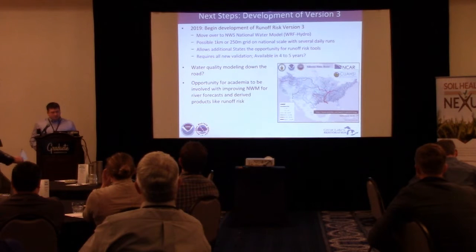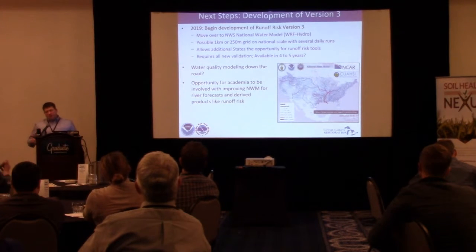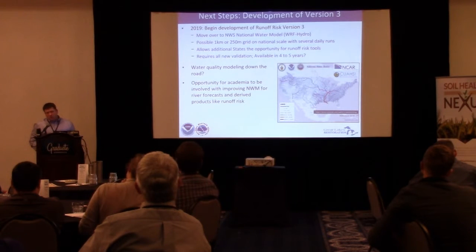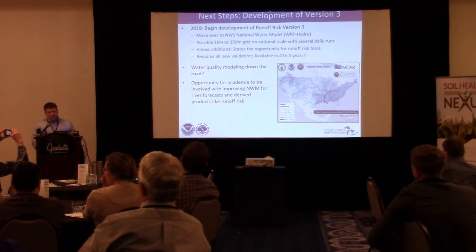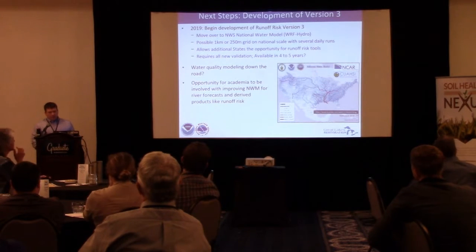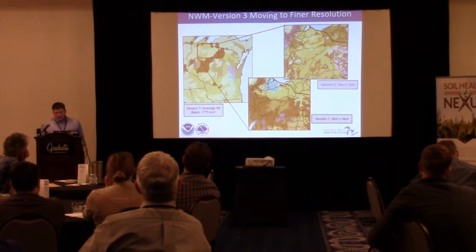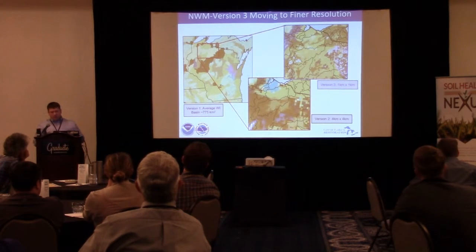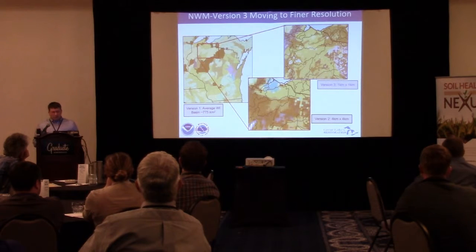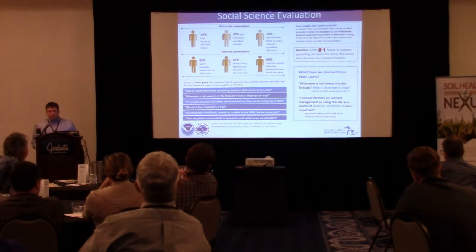Just this month we're starting off our third version, transferring over to the National Weather Service's new National Water Model. That'll be run on an even finer scale — down to one kilometer resolution — with multiple daily runs every day, and it'll be available nationwide. So other states outside the Great Lakes can come on board. It'll be a two-year development process and probably another two-year cycle to get it onto the operational supercomputer, so we're looking at four to five years out. The resolution goes from the original irregular basin model at 300 square miles, down to the version two four-kilometer grid, and now up to a one-kilometer grid.